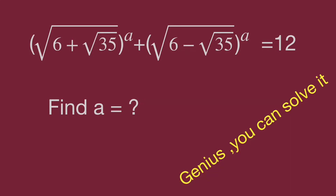Hello, you are watching Bala Hippo Math Genius Readdle. The question is: the quantity (√6 + √35) raised to the power of a, plus the quantity (√6 − √35) raised to the power of a, equals 12. Find the value of a. Can you find the value of a? Pause the video and find the value of a on your own while you are ready. Keep watching the video to find the result.